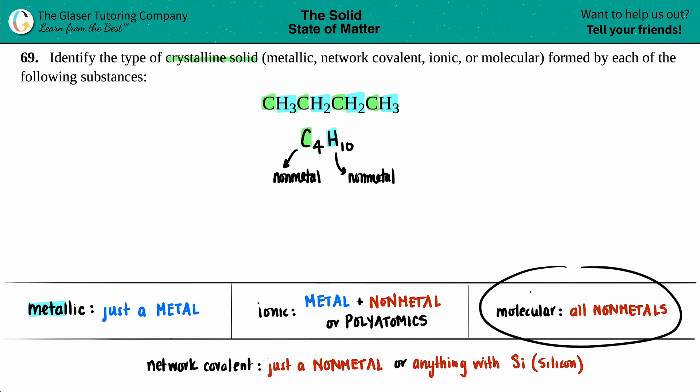Molecular is next. Now, molecular crystalline solid comes from a molecule, and we use the word molecule when we're describing covalent compounds. And covalent compounds are the ones that are all nonmetals. And I got a nonmetal and a nonmetal. Those are all nonmetals. So this is probably going to be a molecular crystalline solid.